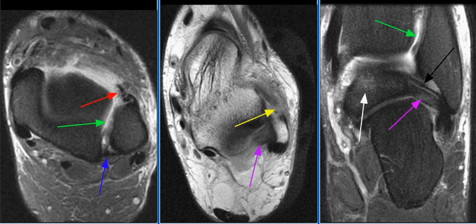Patients with syndesmotic ligament injuries present with pain, worse with external rotation. Anterior syndesmotic ligament tears occur more commonly than posterior syndesmotic ligament tears.